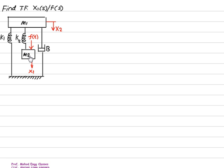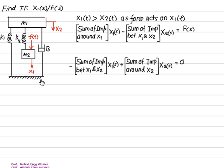The force is applied on m2 with a displacement of x1, so x1 is greater than m2. Since force is applied on mass m2 with displacement x1, x1(t) is greater than x2(t), and therefore our first variable is x1 and second variable is x2. The first variable is x1(s) where the force is applied, so the external force F(s) acts on x1(s). On x2(s) there is no force acting, so the right-hand side equals zero.